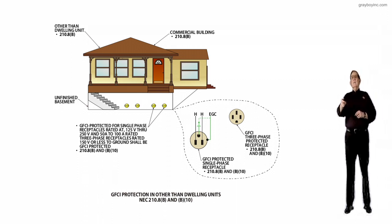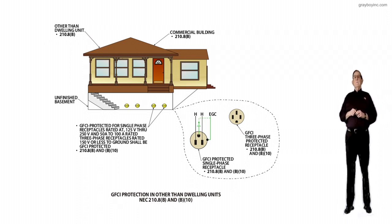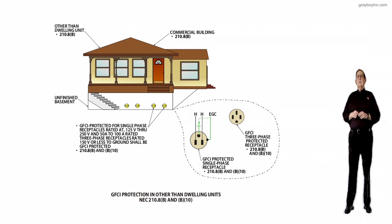Notice the call-out to the right with the arrow pointing to the facility. It's a commercial building, 210.8B. Secondly, it's an unfinished basement according to the call-out to the left pointing to the basement.